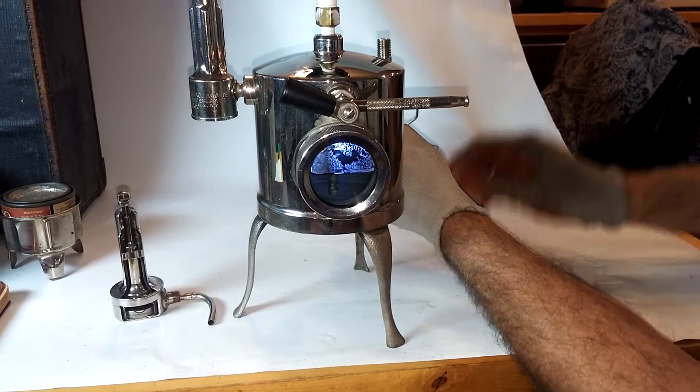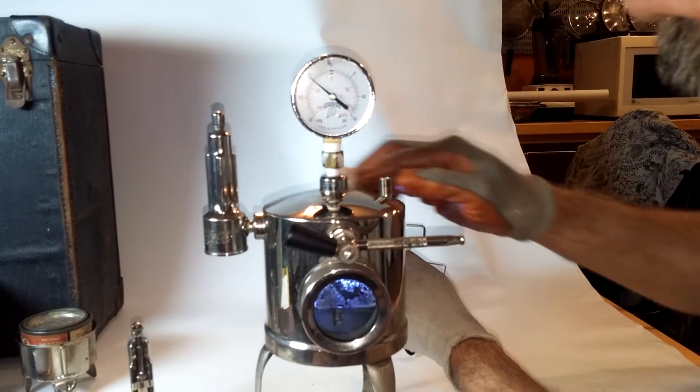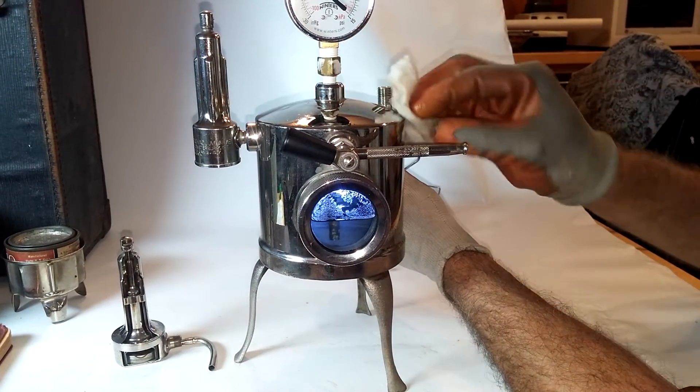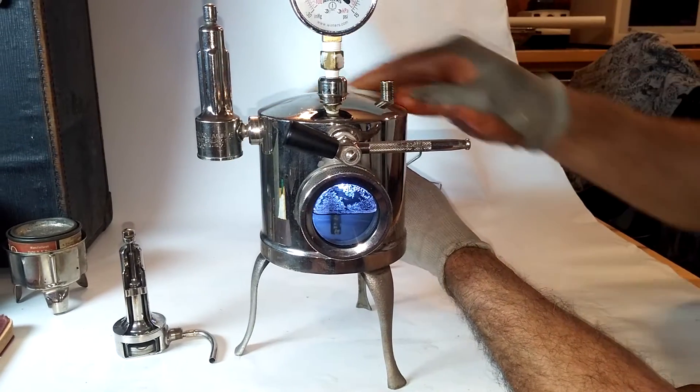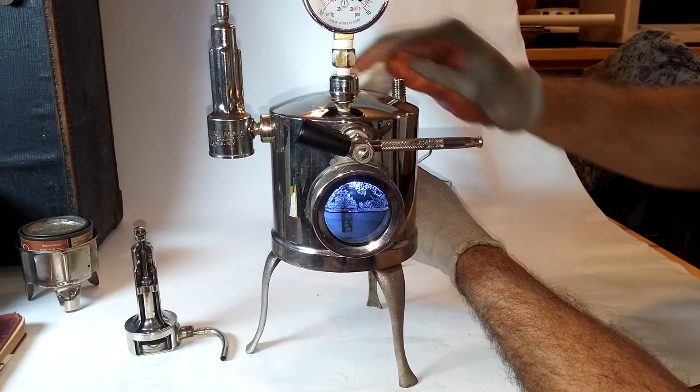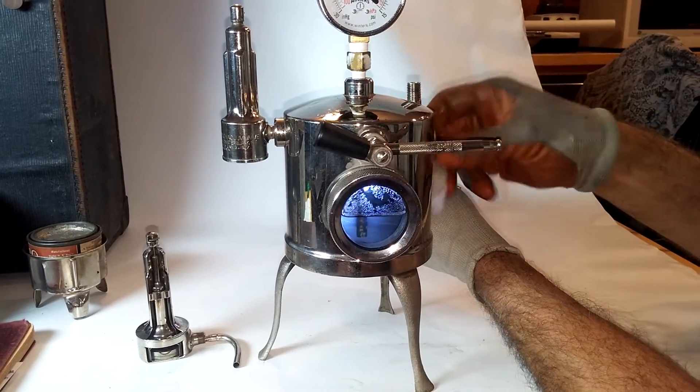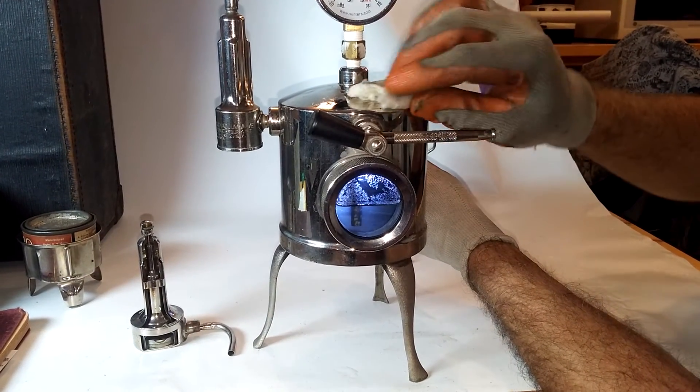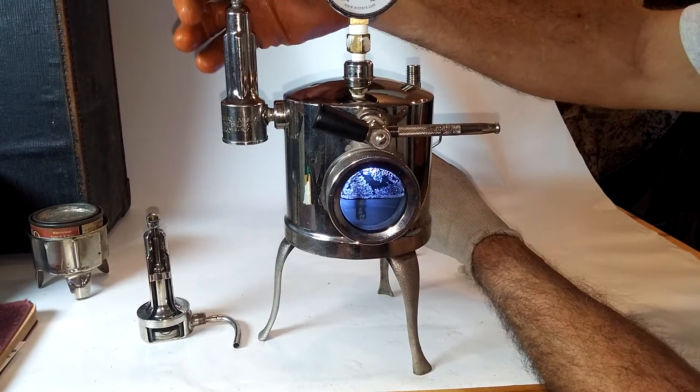You see we're down almost to ten inches of mercury, and the water is still boiling. So this was used, the Hoffman slogan was the watchman of the coal pile. This allowed, when the coal fire burned down, to be able to still continue to heat the building with all these vacuum checks.